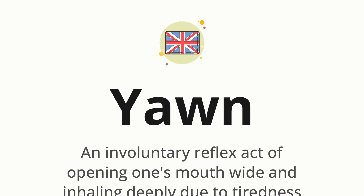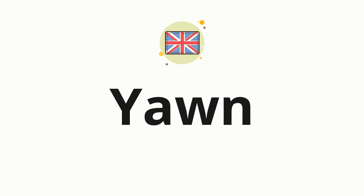Let's say it all together: Yawn. One more time: Yawn. Now let's split the word into syllables and then pronounce each syllable one by one: Yawn.